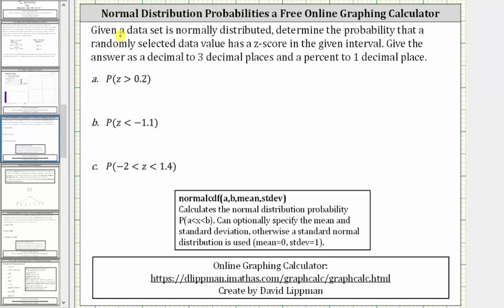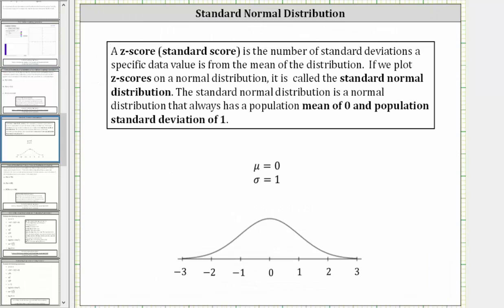For a quick review, a z-score or standard score is a number of standard deviations a specific data value is from the mean of the distribution. If we plot z-scores on a normal distribution, it is called the standard normal distribution. The standard normal distribution is a normal distribution that always has a population mean of zero and a population standard deviation of one.